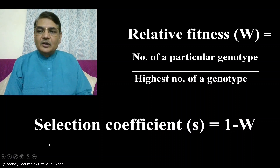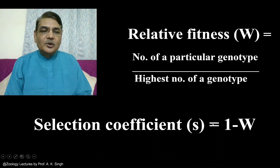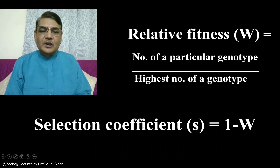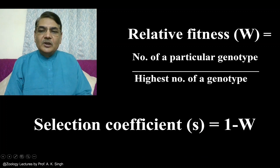The other parameter, selection coefficient, can be calculated using the formula 1 minus W. If we have obtained the values of relative fitness, those values are subtracted from 1 to give the selection coefficient, indicated by S. The selection coefficient is the extent of the deleterious effect of a particular genotype.